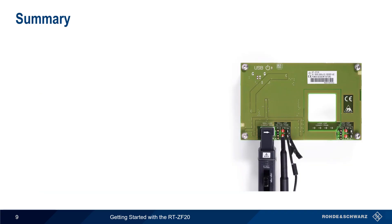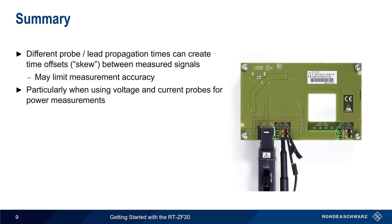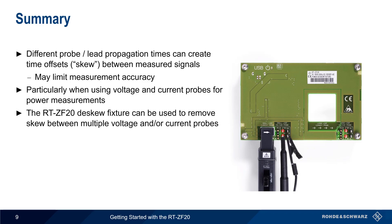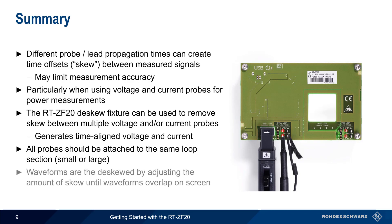Let's end with a brief summary. Different propagation times on different oscilloscope channels can lead to time offsets between measured signals. These offsets can limit measurement accuracy, and this is particularly true when using a combination of voltage and current probes for making power measurements. The RTZF20 power de-skew fixture can be used to remove skew between multiple voltage and/or current probes by generating a signal with time-aligned voltage and current. Both the voltage and current probes are attached to one of the two loop sections, and then the time offset or skew between the displayed waveforms is adjusted on the oscilloscope until the waveforms overlap on screen.